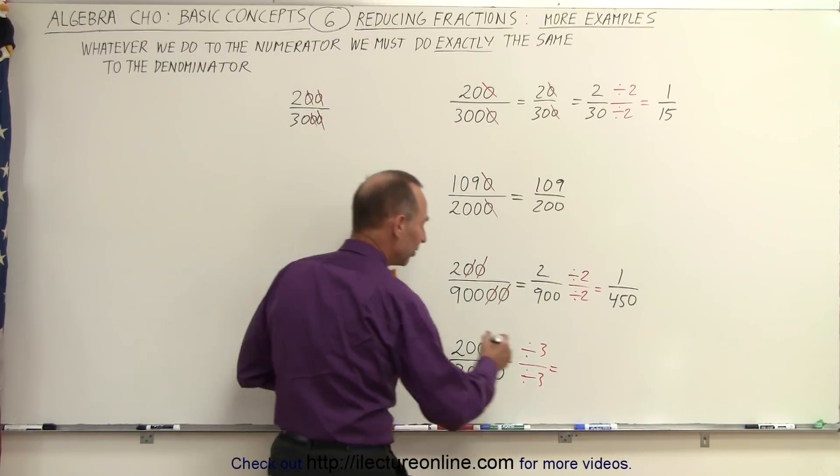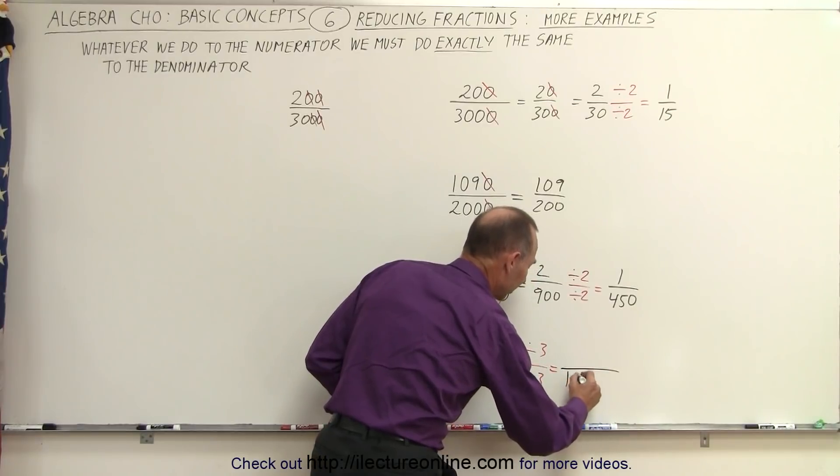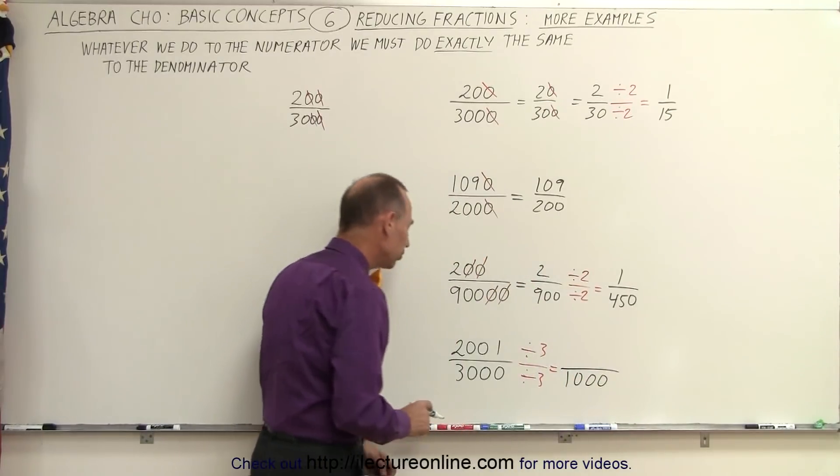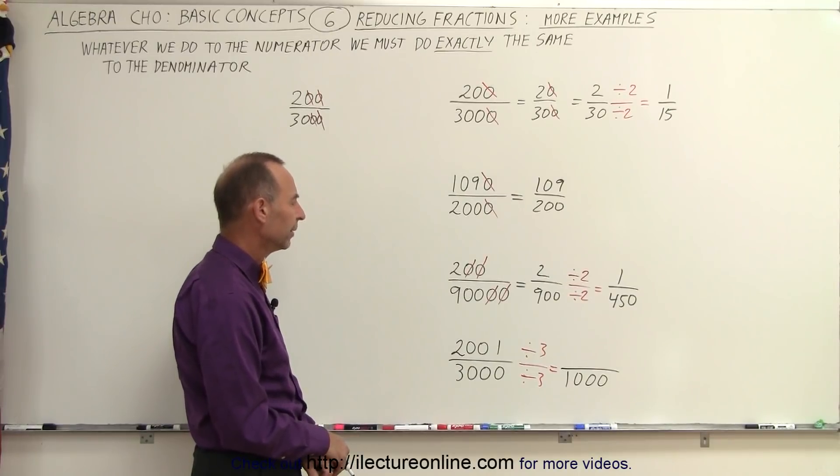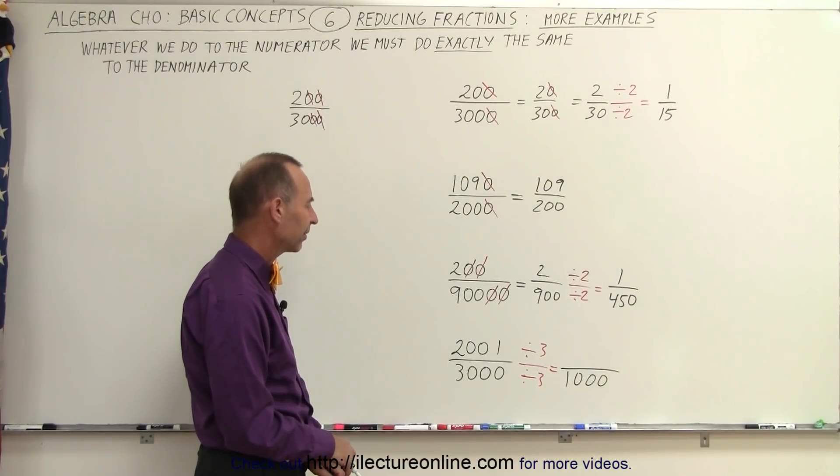Of course, the denominator is easy. 3000 divided by 3, well, that's equal to 1000. But what about the numerator? Well, the numerator. So that looks like 667.